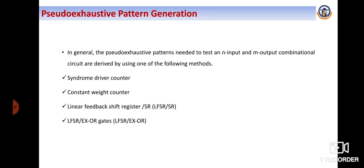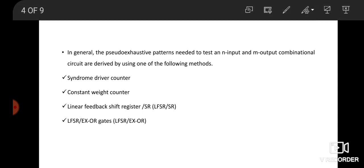Under pseudo-exhaustive test pattern generation, we are mainly classified into four ways: syndrome drive counter, constant weight counter, linear feedback shift register slash SR — that means shift register — and linear feedback shift register XOR gate concept.